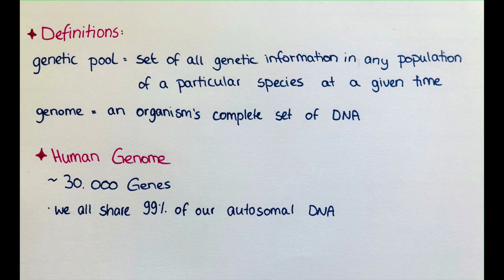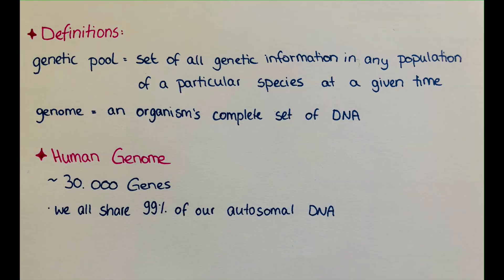By definition, a consanguineous union includes all those whose coefficient of relationship r is greater than or equal to 0.03125, or being second cousins or closer. What I think is quite interesting — I wouldn't have thought so — globally it is estimated that at least 8.5% of all children in this world have consanguineous parents.